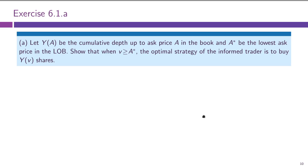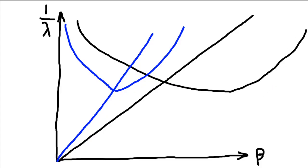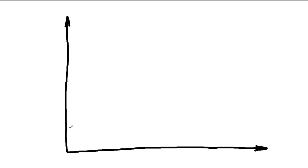We let Y(A) be the cumulative depth up to ask price A in the book, and A* be the lowest ask price in the limit order book. Part A asks us to show that when V > A*, it is optimal for the informed trader to buy Y(V) shares — exactly up to where the supply curve intersects V.